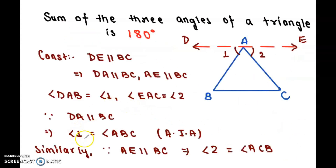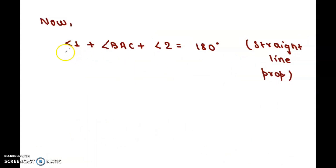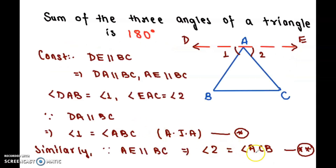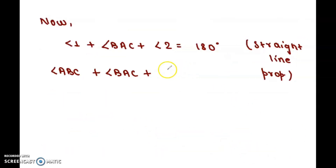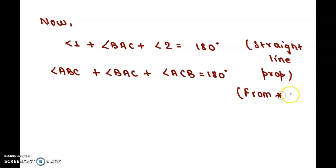Now, angle 1 equals angle ABC (from the first alternate interior angle result, marked with a star), and angle 2 equals angle ACB (from the second result, marked with a double star). Substituting, we get: angle ABC plus angle BAC plus angle ACB equals 180 degrees.